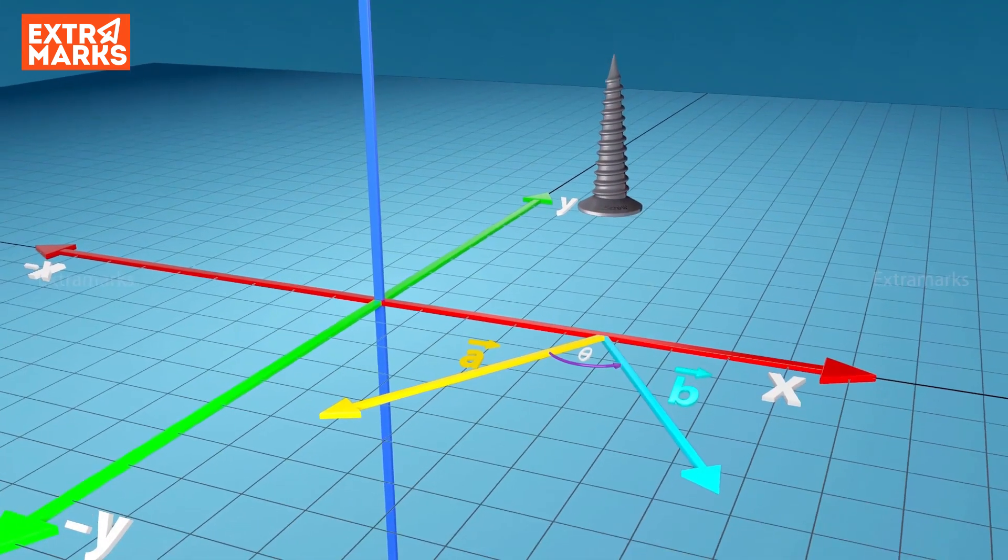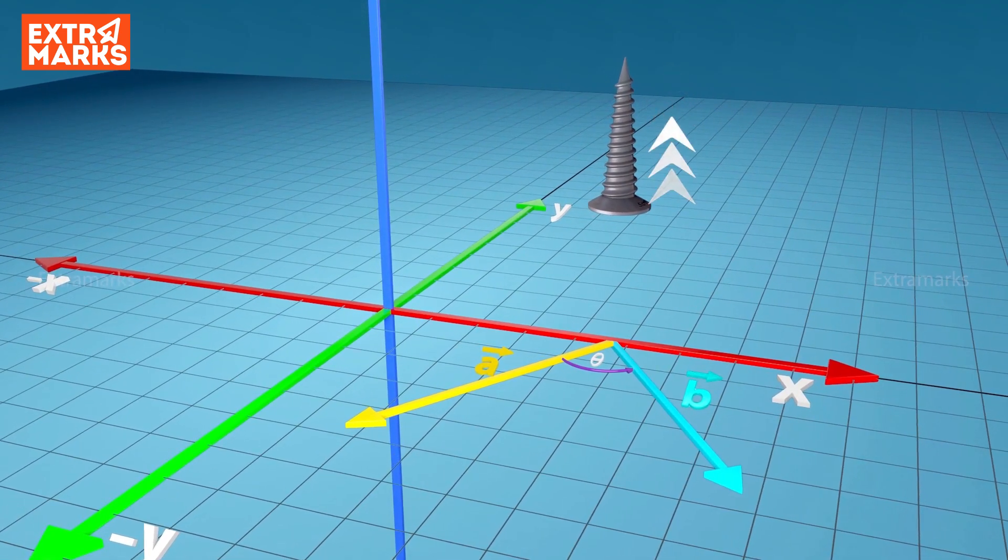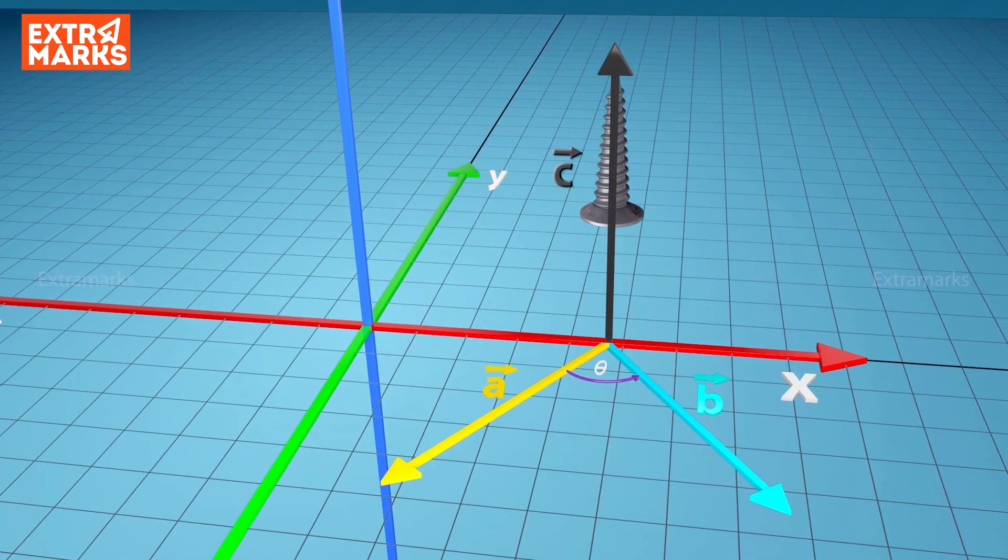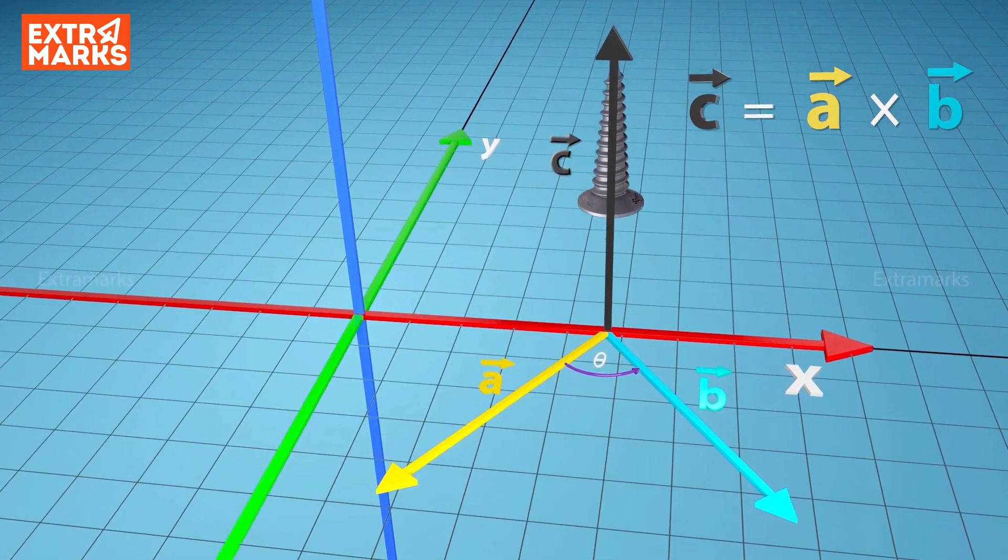The tip of the screw advances in the upward direction perpendicular to vector A and B, representing the direction of vector C, i.e. the vector product of A cross B.